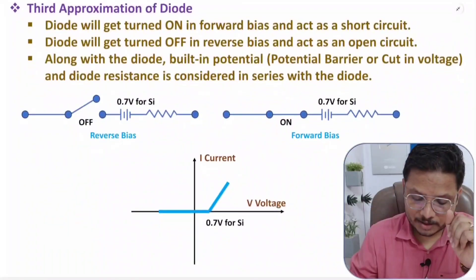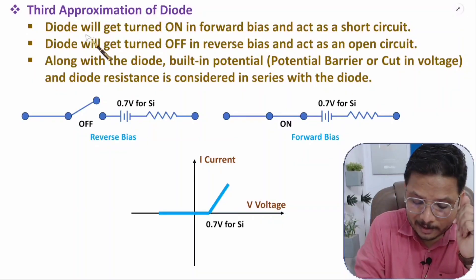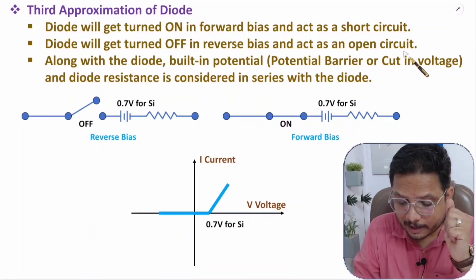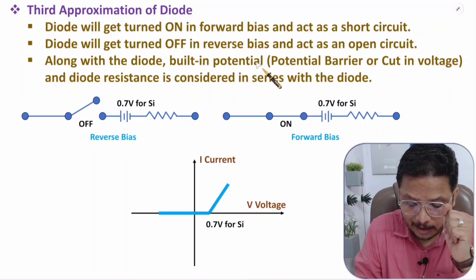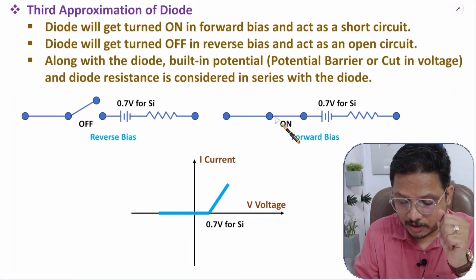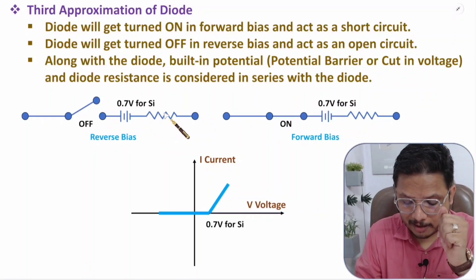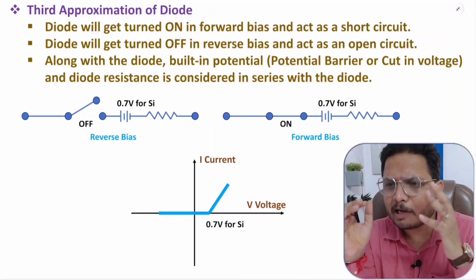Now let me explain the third approximation, which is the practical one. In the third approximation we consider the linear resistance of the diode. The diode turns on in forward bias as a short circuit and turns off in reverse bias as an open circuit. Along with the built-in potential of 0.7 V for silicon, we also consider the diode resistance in series.